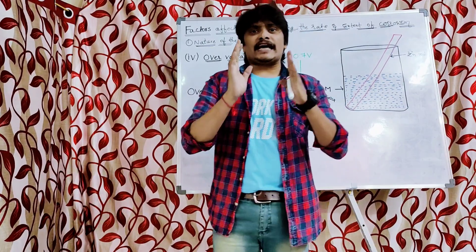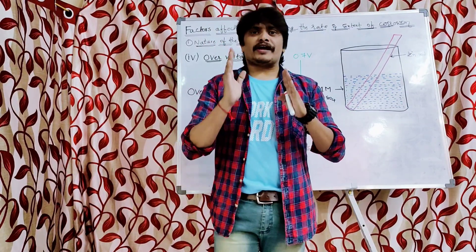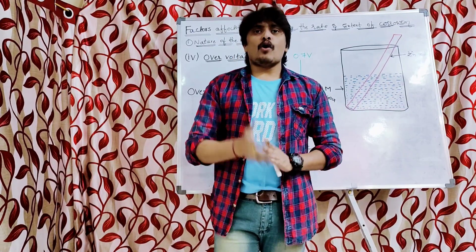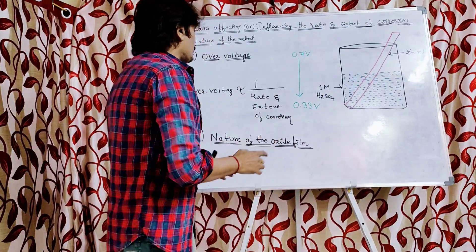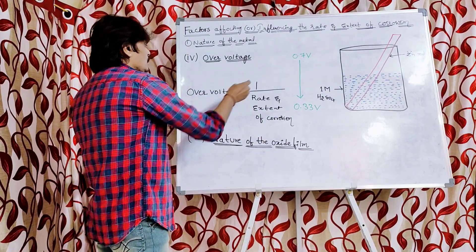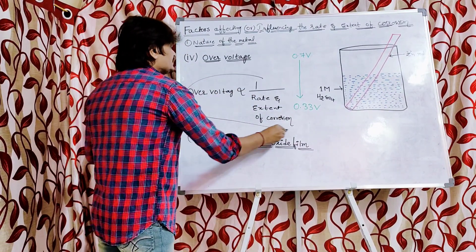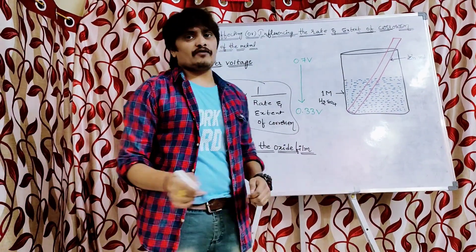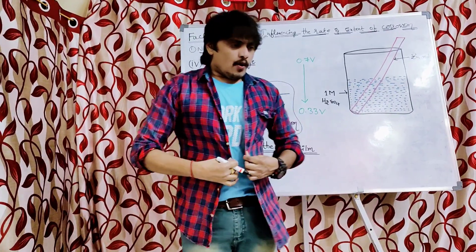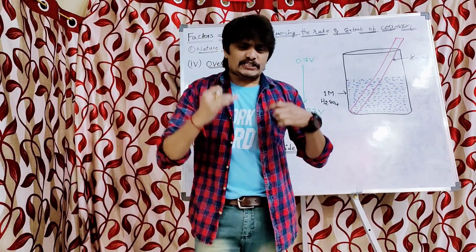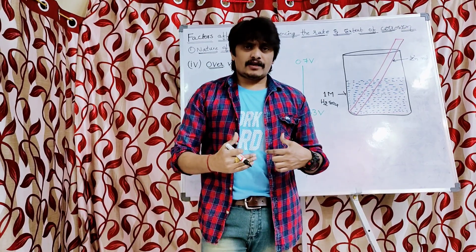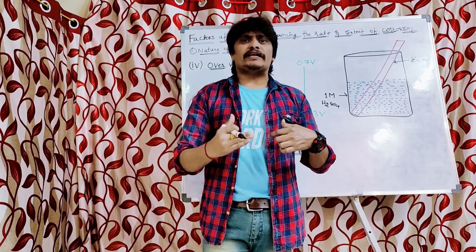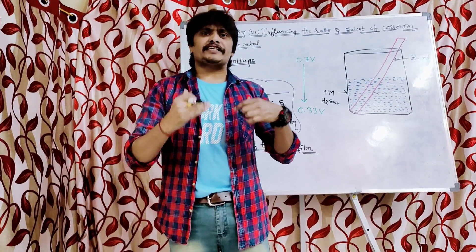Scientists came to the conclusion that over-voltage is inversely proportional to the rate and extent of corrosion. Now we have to discuss based upon which criteria the scientists came to this conclusion that over-voltage is inversely proportional to rate and extent of corrosion.